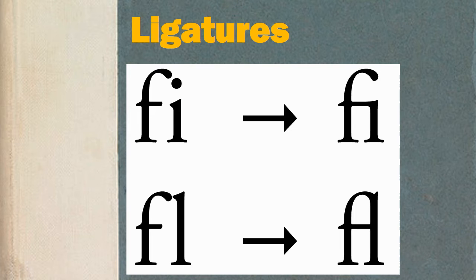Ligatures are where two letters — for example 'fi', 'fl', or two f's — are represented by a single glyph. It's up to you whether you use ligatures or stick with two separate glyphs for each letter, but using ligatures does make large blocks of text more legible.